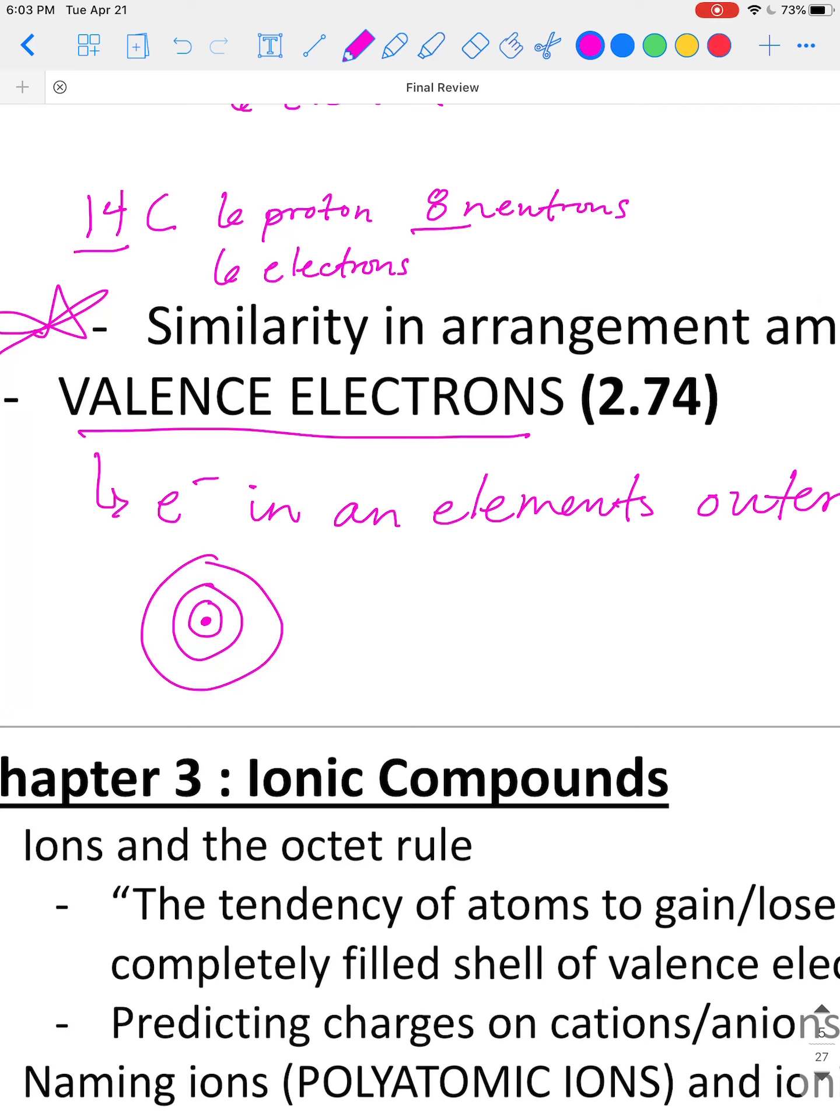So remember, we can draw an atom like layers of an onion. If here is the nucleus, you can have layer 1, layer 2, layer 3, depending on what row it's in. If it's on row 3, it's going to have three energy shells. If it's on row 4, it'll have four energy shells. But wherever that outer row is, the electrons here, these are valence electrons.